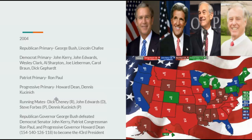Going on to the 2004 election, Republicans have George Bush, Democrats John Kerry, Patriots Ron Paul, and Progressives Howard Dean. Running mates: Republican Dick Cheney, Democrat John Edwards, Patriot Steve Forbes, Progressive Dennis Kucinich. Republican Governor George Bush defeats Democrat Senator John Kerry, Patriot Congressman Ron Paul, and Progressive Governor Howard Dean, 154 to 140 to 116 to 118, to become the 43rd President. Republicans are still favored over the Patriot Party, and the far right is anti-war along with Progressives and Democrats.